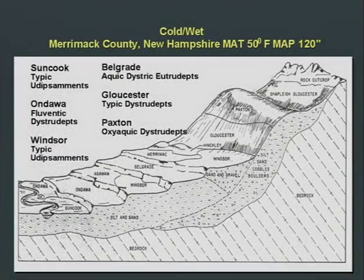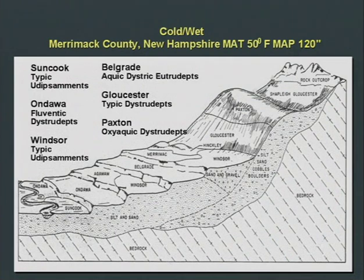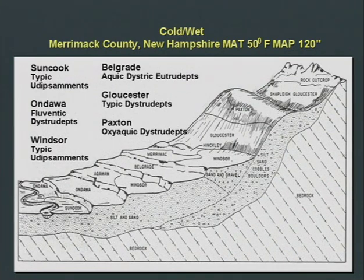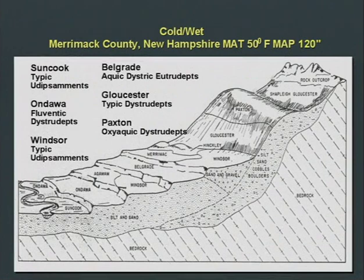If we look at topographic relationships under different soil-forming conditions — in a cold, wet environment with mean annual temperature about 50°F and mean annual precipitation about 120 inches — we note systematic differences in soil properties as shown in the cross-sectional figure. The Belgrade, Gloucester, and Paxton soils are all upland soils, well-drained and well-developed. Belgrade is actually intermediate between uplands and lowlands and has an Aquic subgroup, suggesting it is affected by water table or sublateral flow from upland positions. The Suncook, Ondawa, and Windsor soils are all lowland soils possessing weakly-developed profiles, suggesting deposition of material from upland positions.